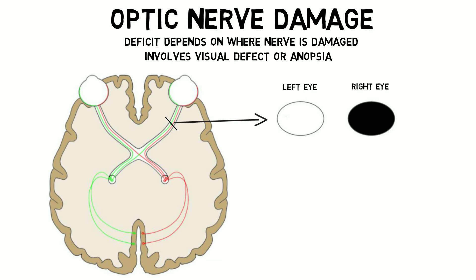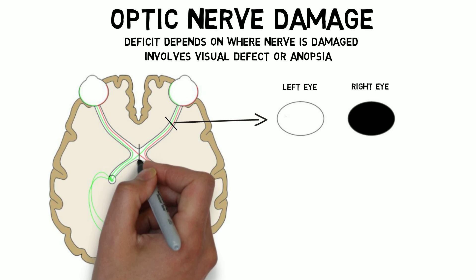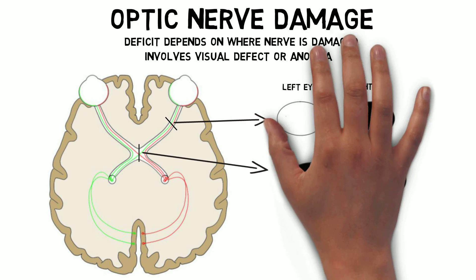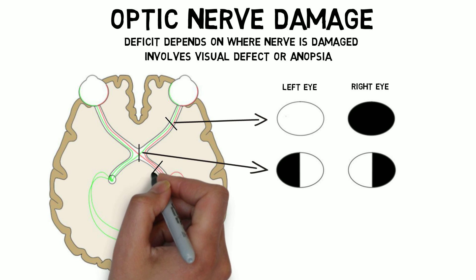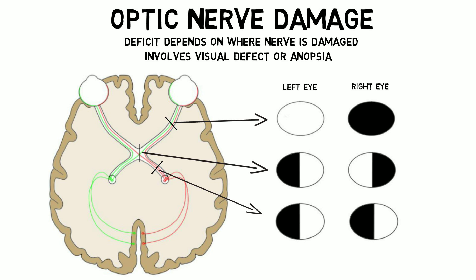Damage to the middle of the optic chiasm will cause loss of the lateral visual field of both eyes, due to the way fibers from the nasal side of the retina cross over at this point. If the optic tract is damaged, one half of the visual field will be lost in both eyes.